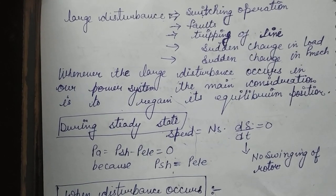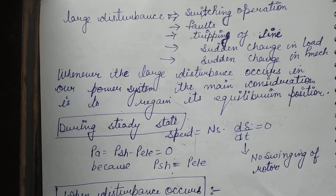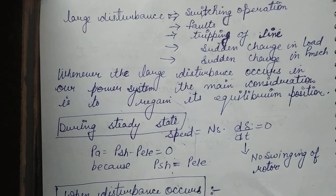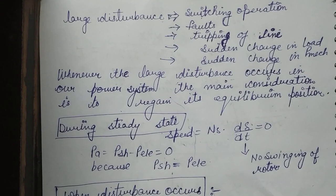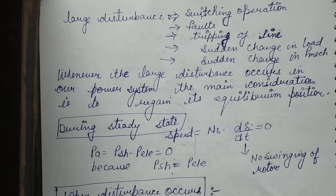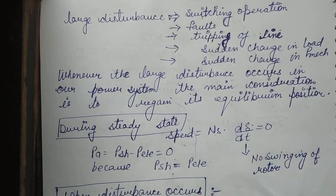Hello students, today we will study about transient state stability and the transient state stability limit. In the previous lecture, I explained how we can find the swing equation when there is a small disturbance in our system, and what conditions help us determine whether our system will regain its equilibrium position. Today, again with the help of the swing equation, we will determine whether our system will regain its equilibrium position when large disturbances occur in the power system.